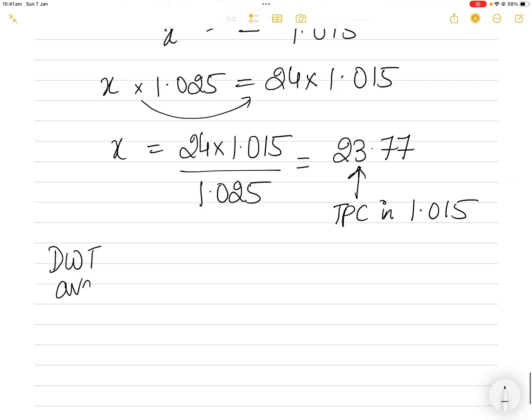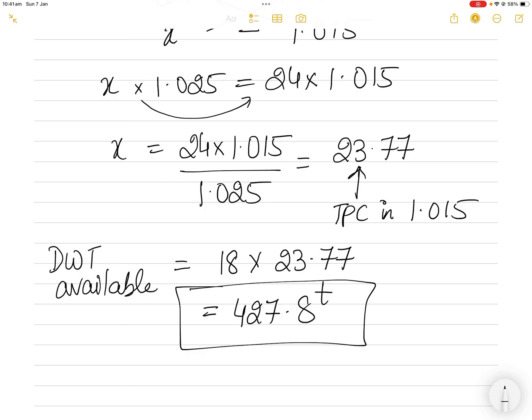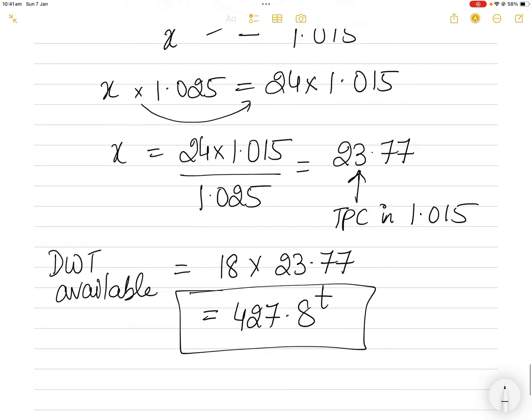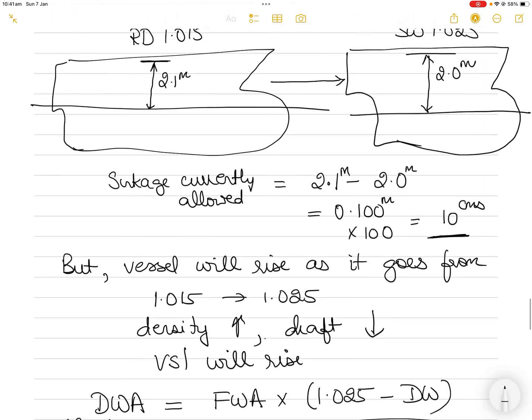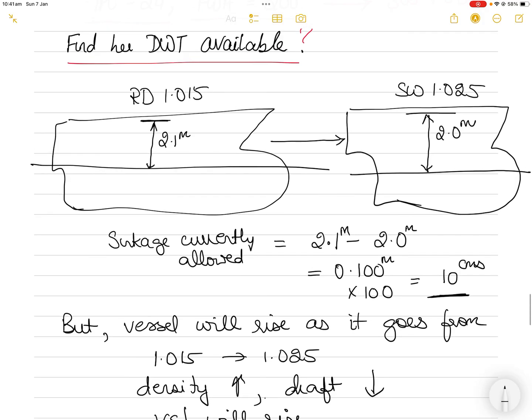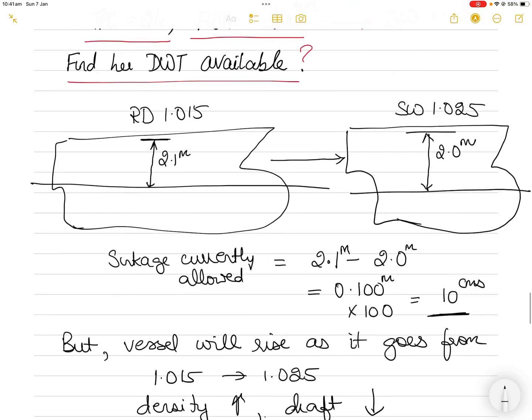Deadweight available is sinkage required times TPC: 18 centimeters × 23.77 (TPC in dock water) = 427.8 tons. This is the available cargo or weight that I can load on my ship to sink the vessel such that when it goes to seawater, the statutory freeboard is 2 meters.